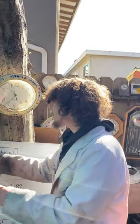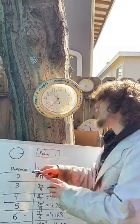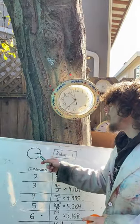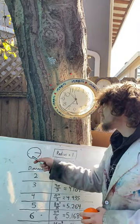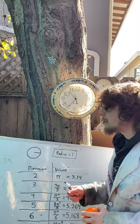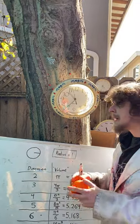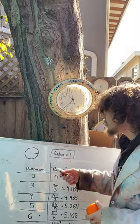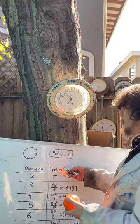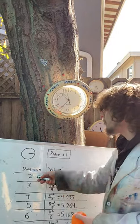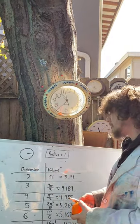You want to see something surprising? If I take a circle with radius 1, its area simplifies to pi. But let's think of circles as two-dimensional balls and area as a two-dimensional sort of volume of the second dimension.